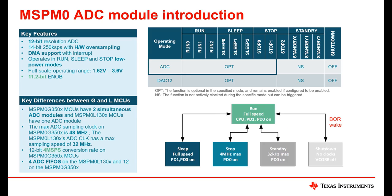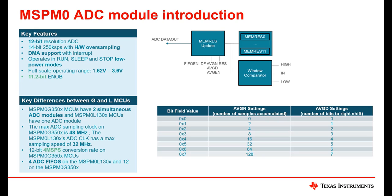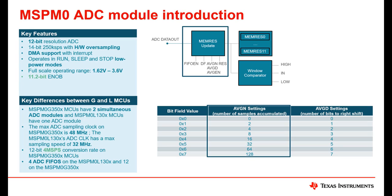The MSPM0 ADC module can operate in a variety of low power modes for low power applications, and it can support the full operating voltage range to accommodate different operating conditions. In addition, the MSPM0 ADC module supports hardware oversampling up to 128 bits, saving significant time in configuration compared to similar software approaches.